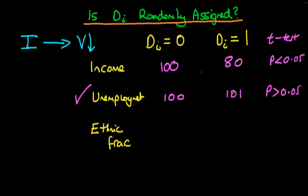The trouble is, seeing as we've already concluded from income that the treatment probably wasn't randomly assigned, and if we think income is an important determinant of violence, then comparing the mean level of violence between the two regions might not be valid. We can continue this process for however many variables we're interested in, comparing to see if there is actually any difference between the control regions and the treated regions.